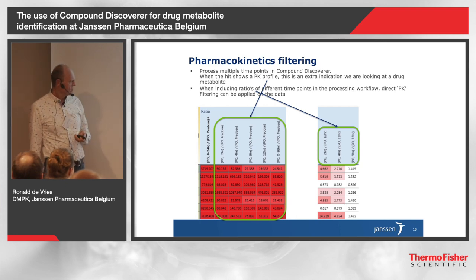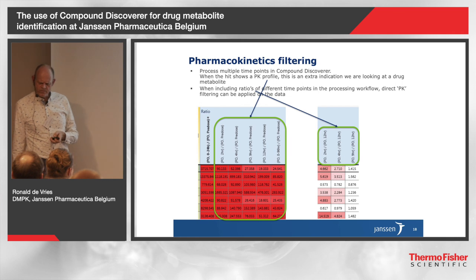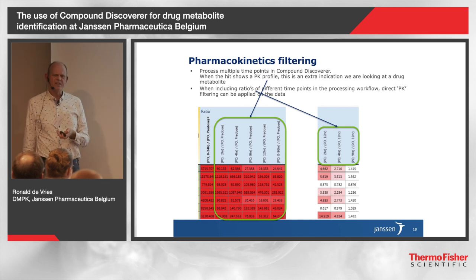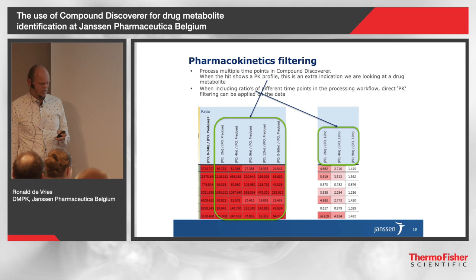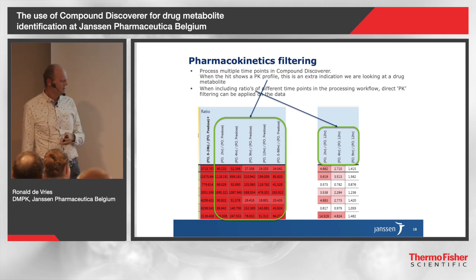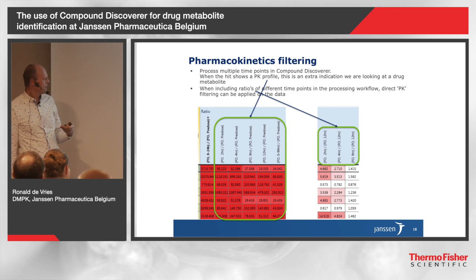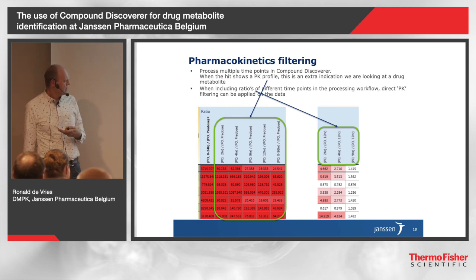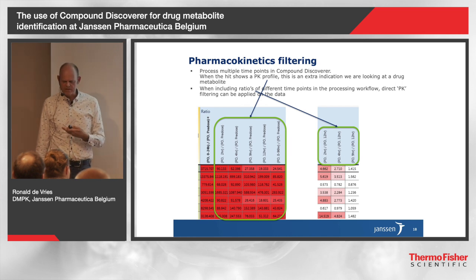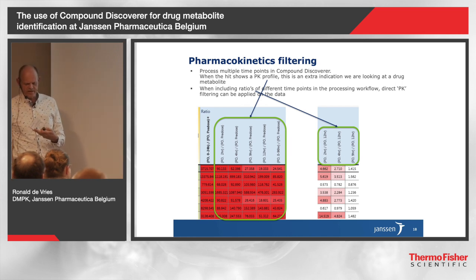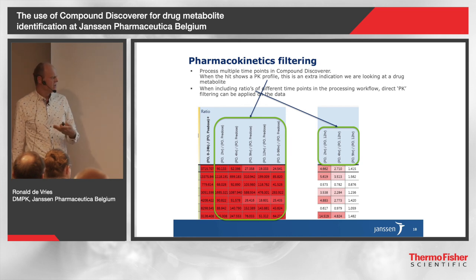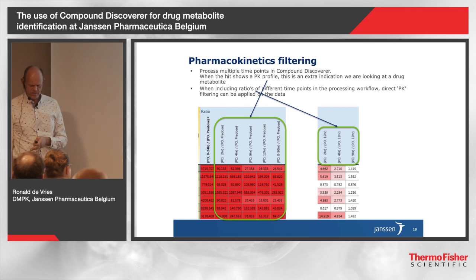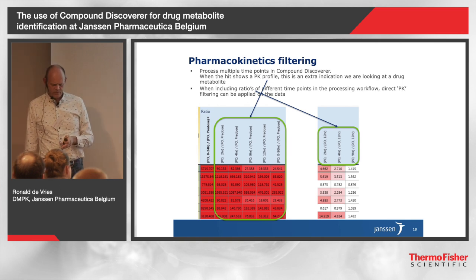I also sometimes look at an in vivo study where we have plasma samples at different time points, and you can see if there's a kind of pharmacokinetic profile that gives you additional confidence that this is really a drug-related hit. You can manually look at how the peak area changes with the time point, but you could also make a separate ratio filter. If you expect that at 24 hours post-dose your signal is much lower than at two hours post-dose, you just make a ratio filter of the two-hour over 24-hour sample and filter on that.